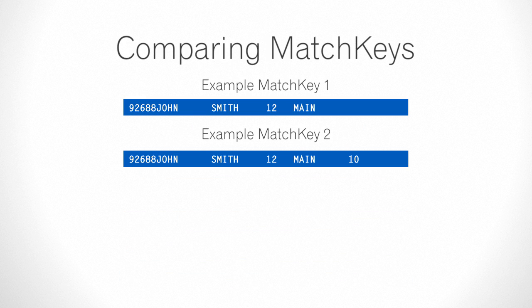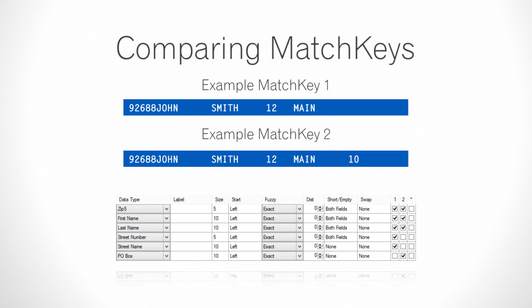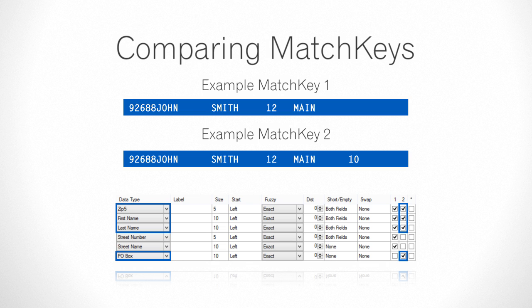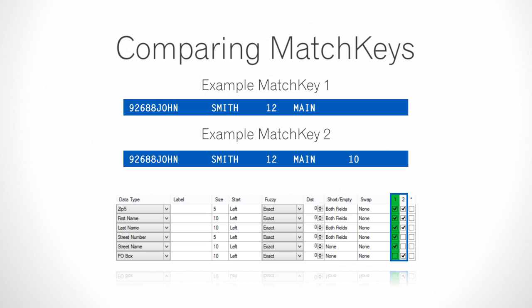Comparing match keys. In an actual process we'll have millions of keys, but to keep it simple we'll stick with these two. We're ready to compare them using the match code columns of component conditions. These keys have the same zip 5, first name, last name, street number, and street name, satisfying all of column 1's conditions. Therefore the records match. For column 2 conditions, the keys have the same zip 5, first name, and last name, but the P.O. Box does not match, so all of the conditions are not satisfied. However, these records are returned as a match because column 1 was satisfied. If any one of the columns are satisfied, the records are returned as a match.